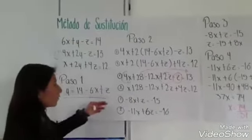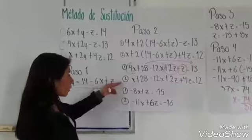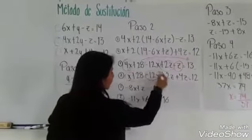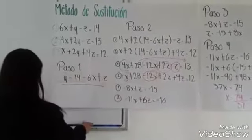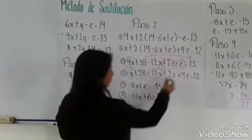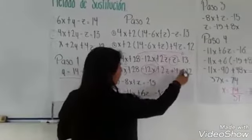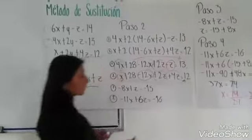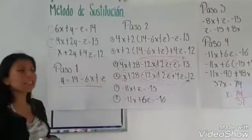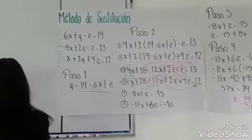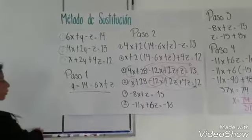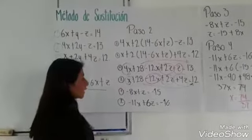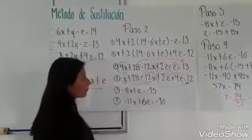De la misma manera lo vamos a realizar en la segunda ecuación, con las X y las Z. De igual forma los números que son independientes se van a pasar al extremo del signo igual. Y en la segunda ecuación nos salen menos 8X más Z es igual a menos 16.